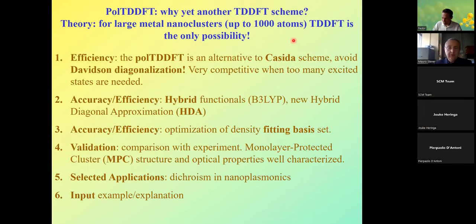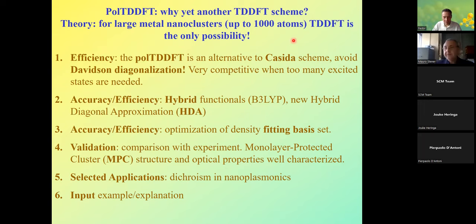We will go through some examples: validation, comparison with experiment — which is very important to have an idea of the accuracy we can reach with this method — and also selected applications in large systems, for example nanoplasmonics. Finally, I will show you some examples explaining the input, which may be very important from the user point of view.